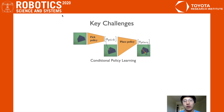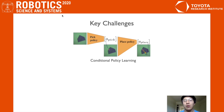A logical choice of architecture for the policy would be an autoregressive structure, where we have a pick policy that outputs a pick-point, and then a conditional place policy that outputs the place-point conditioned on the pick-point.